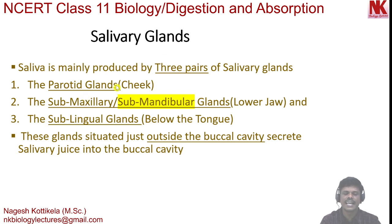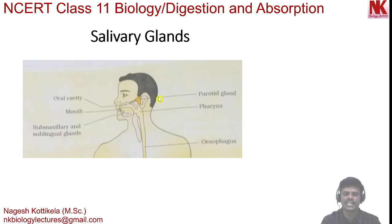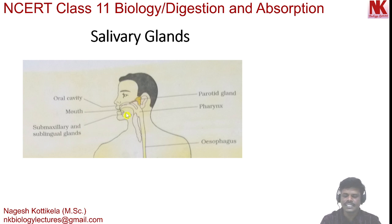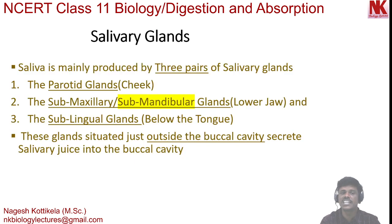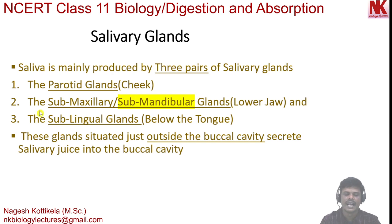The parotid glands are located in the cheek region, as you can see in the diagram. The sub-maxillary glands are located in the lower jaw corners. Sub-lingual glands are located below the tongue. To summarize: parotid glands are in the cheek region, sub-maxillary or sub-mandibular glands are in the lower jaw corners, and sub-lingual glands are below the tongue.